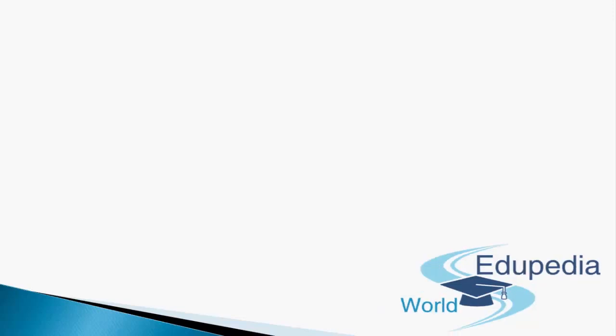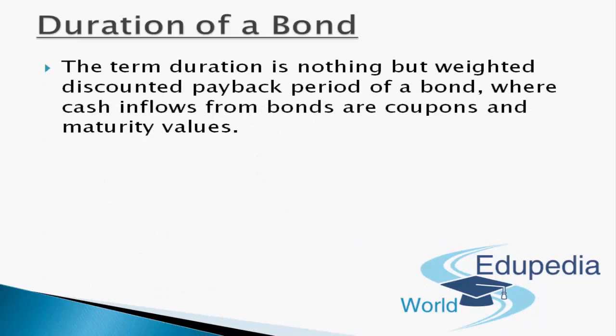Now we start with today's first topic: duration of a bond. The term 'duration' is nothing but the weighted discounted payback period of a bond, where cash inflows are coupons and maturity values. We have already learned in capital budgeting at CA IPCC level the term 'payback period,' which tells us when in years we receive our initial investment back through project inflows. This ignores the time value of money.